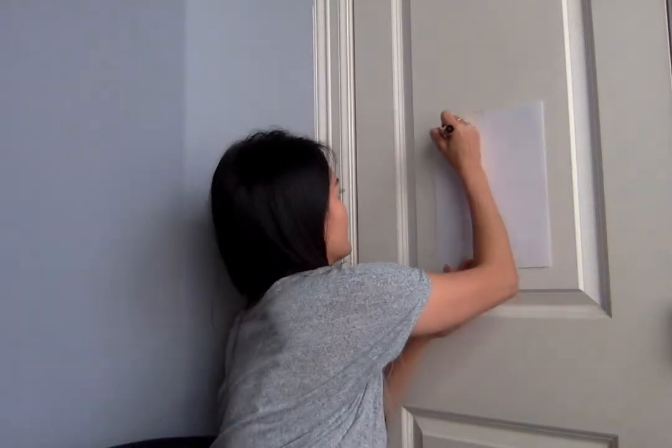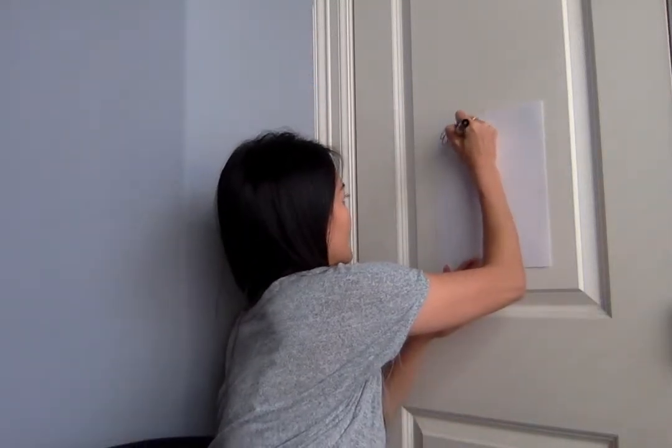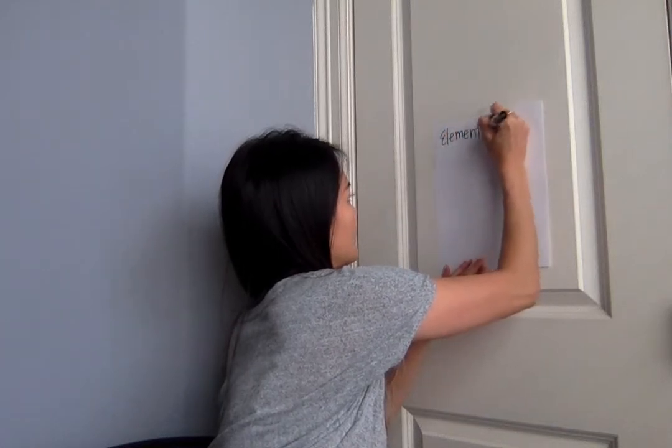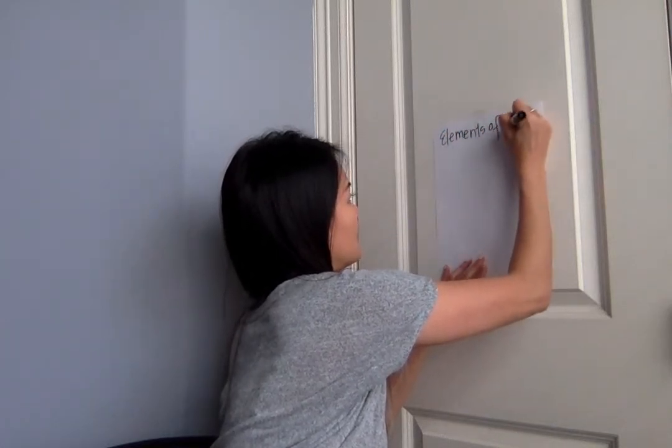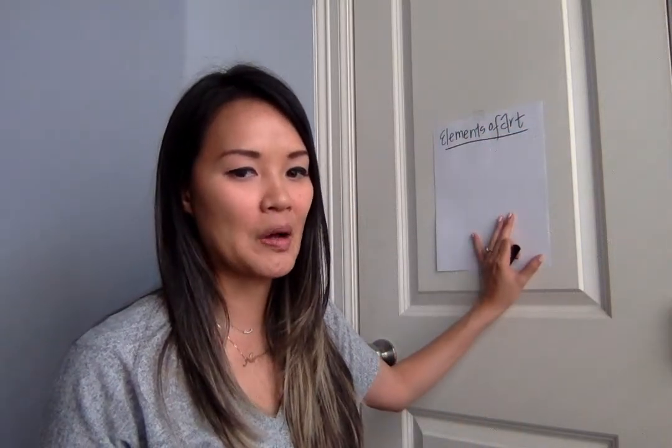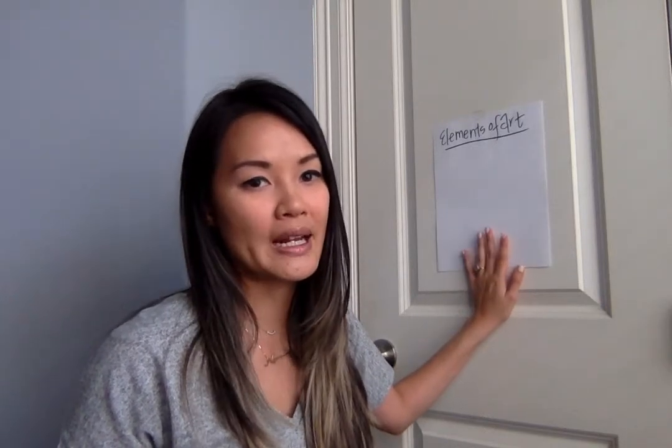We're going to review the seven elements of art and you're going to create a little mini anchor chart at home as well. You can create it along with me or wait until the very end. Your assignment will be to create an elements of art anchor chart — I want it to be neat. It doesn't have to look exactly like mine but it does have to express the elements of art.